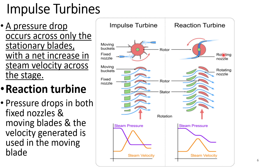There are basically two types of turbines: impulse turbine and reaction turbine. In an impulse turbine, pressure drop occurs only in the stationary blade with a net increase in steam velocity across the stage. In a reaction stage, pressure drops in both the fixed nozzle and the moving blade, and the velocity generated is used in the moving blade.